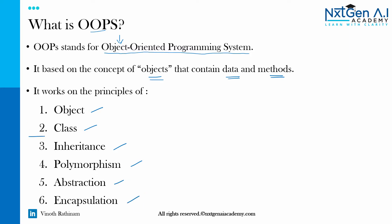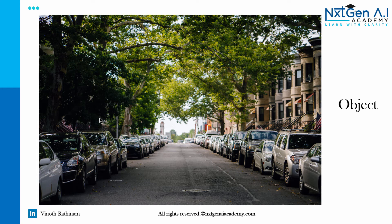In this video we will be learning about object and class. In our world, anything we take is considered as an object. For example, in this image a car is an object, this building is an object, even a tree is an object. If someone stands here, the person is also an object. So everything around us is considered as an object.